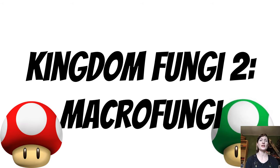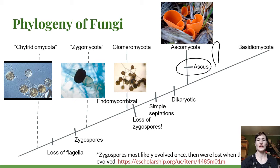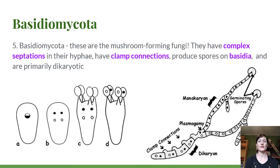Welcome to Kingdom Fungi part two: the macro fungi. In this lecture we're going to start talking about the Basidiomycota. Here's our phylogeny of fungi — we just finished talking about the ascomycetes, which are defined by the presence of the ascus, a sac-like structure containing eight ascospores inside. Now we're going to be looking at the Basidiomycota, which are defined by that name as well — the Basidiomycota are the mushroom-forming fungi.